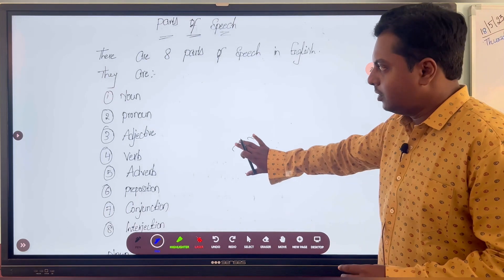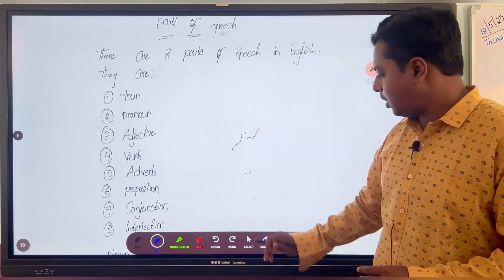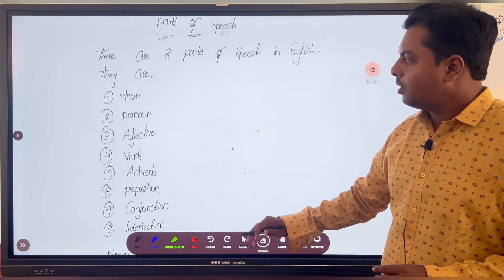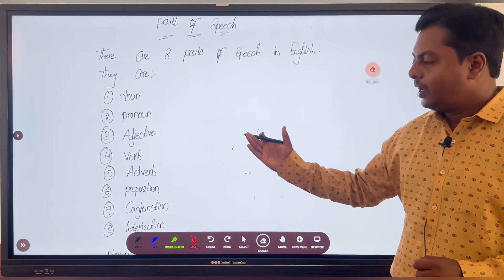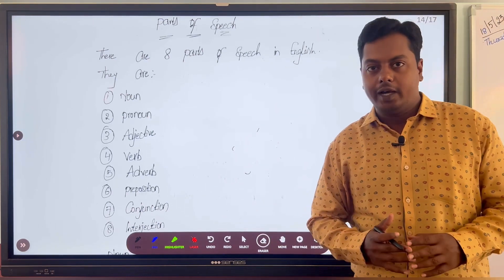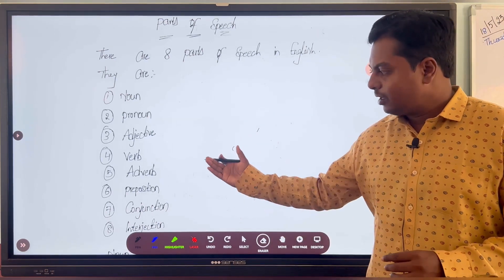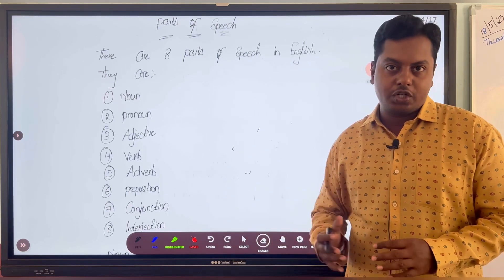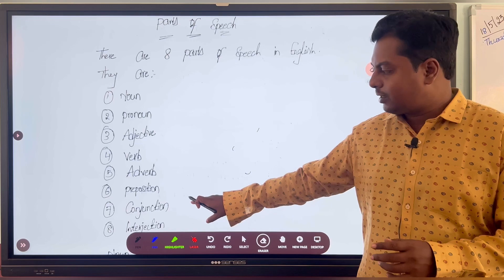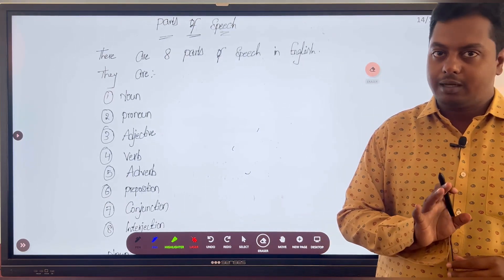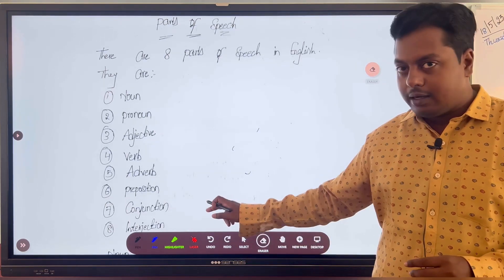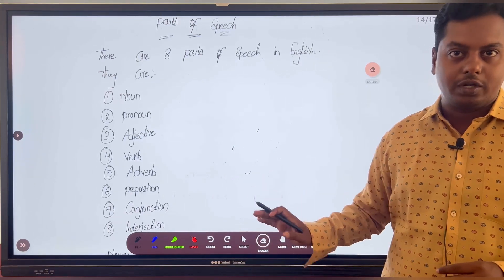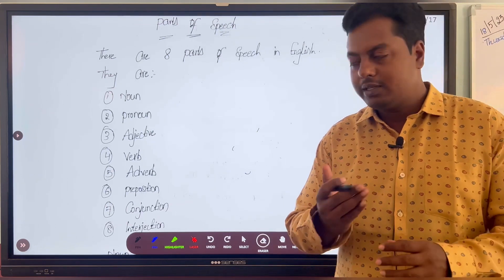They are: number one, noun; pronoun; number three, adjective; number four, verb; number five, adverb; number six, preposition; number seven, conjunction; number eight, interjection. Many of you will pronounce conjunction as 'conjuction.' That is completely wrong. It is conjunction, not conjuction. Just correct it.